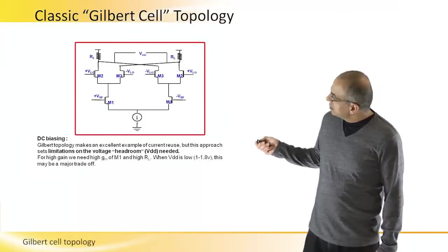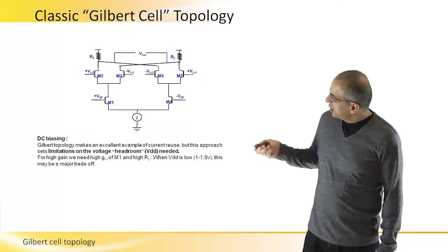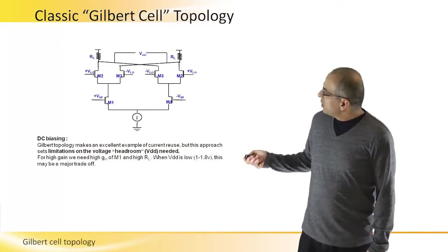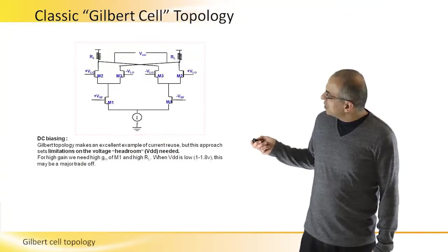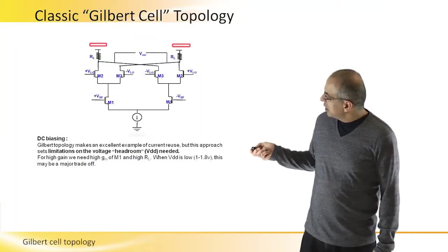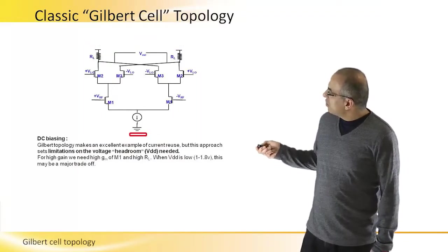What we can see in the slide is that if this is VDD and this is ground, we have many transistors, like at least three.